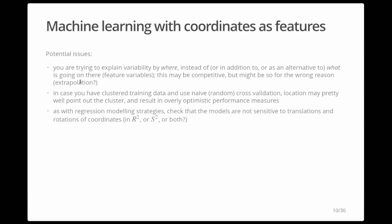With cluster data, a naive or random cross-validation will have location simply point to which cluster you're in and perform well for the wrong reasons. As with all modeling strategies, if you use coordinates, use models that are invariant — insensitive to translations and rotations — because origins of coordinates are arbitrary. You need to check that both on flat and on spherical coordinates.